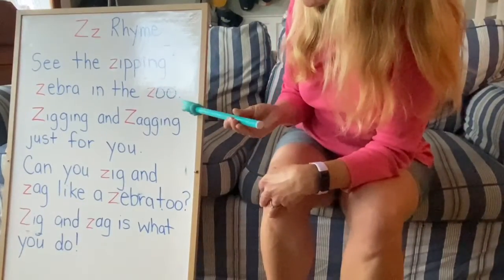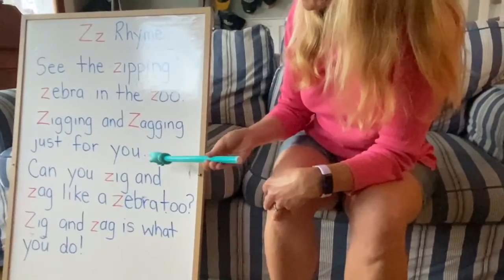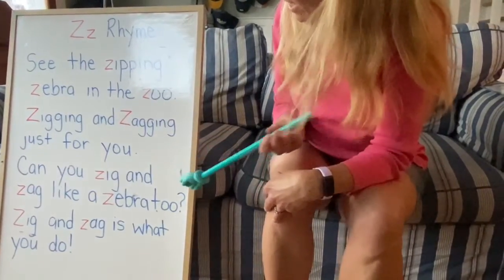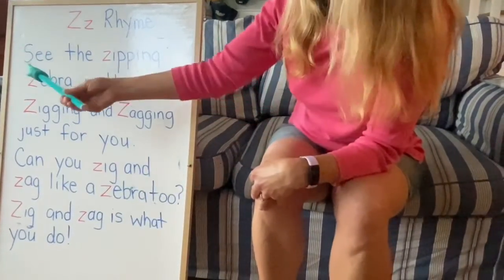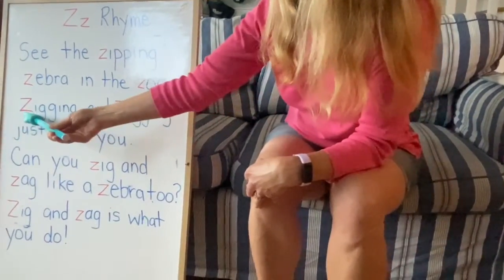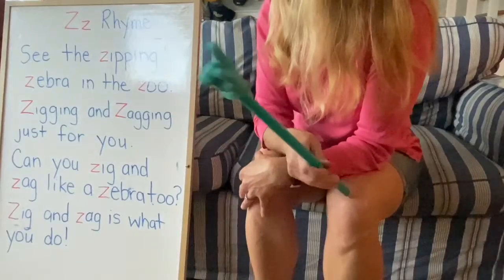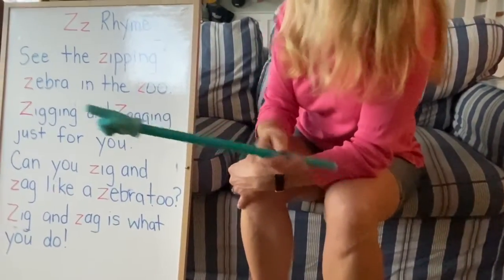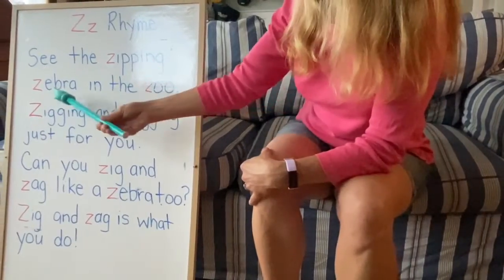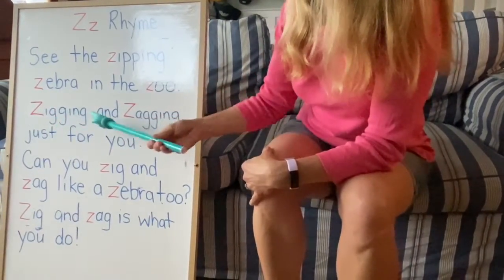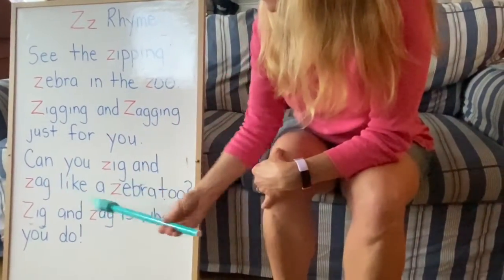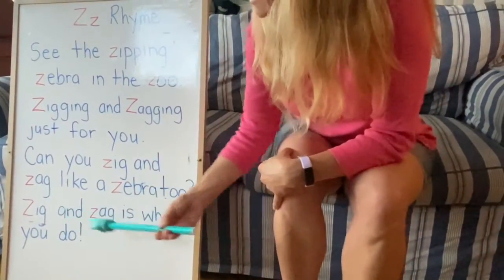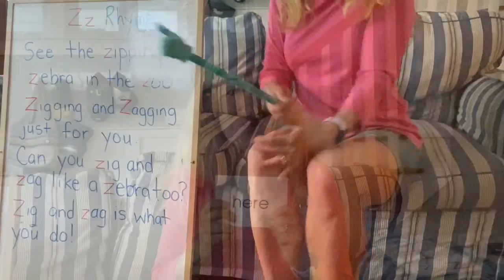Look, they used a period for this first sentence and a period for this second sentence, and a question mark here. And there is our exclamation point. And I made sure we had capitals at the beginning of each of our sentences. Let's say our rhyme once again. See the zipping zebra in the zoo? Zigging and zagging just for you. Can you zig and zag like a zebra too? Zig and zag is what you do.